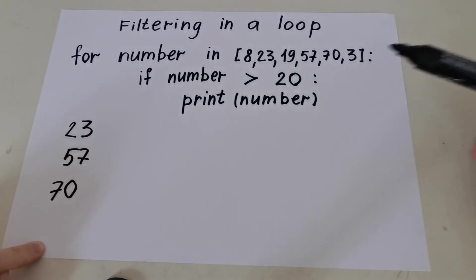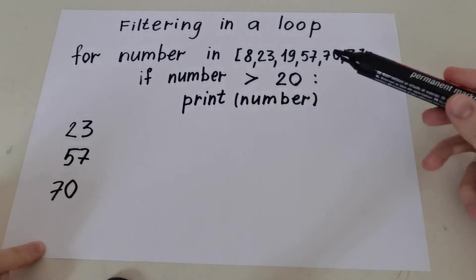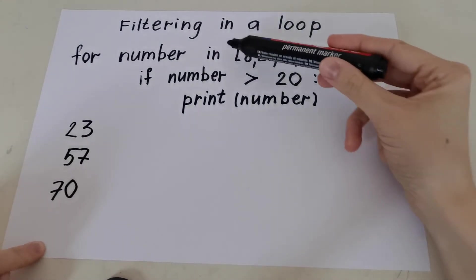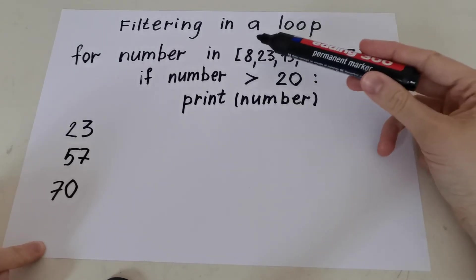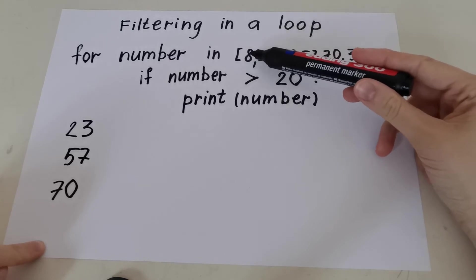So let's check again the code. Here, of course, this is a for loop. So Python checks every single number, every single element in the list. 8 is less than 20.